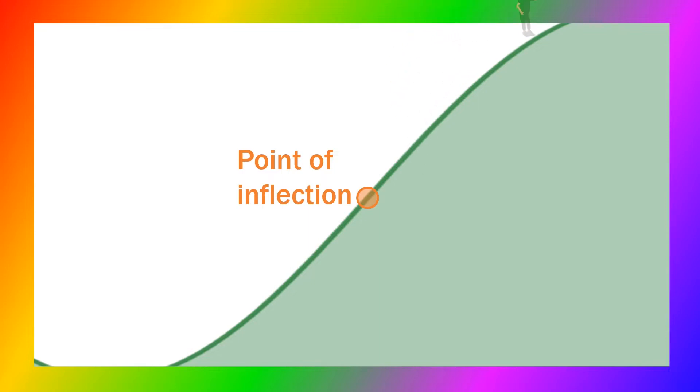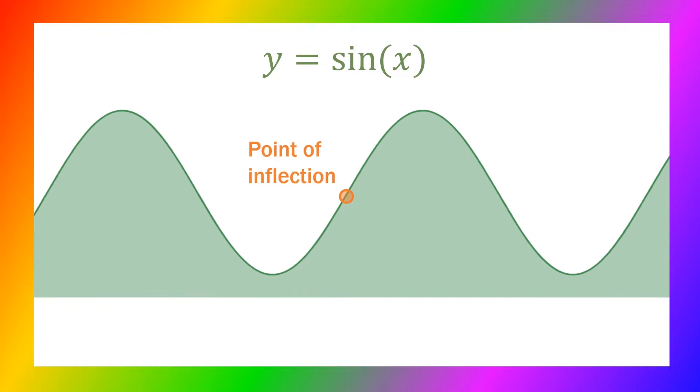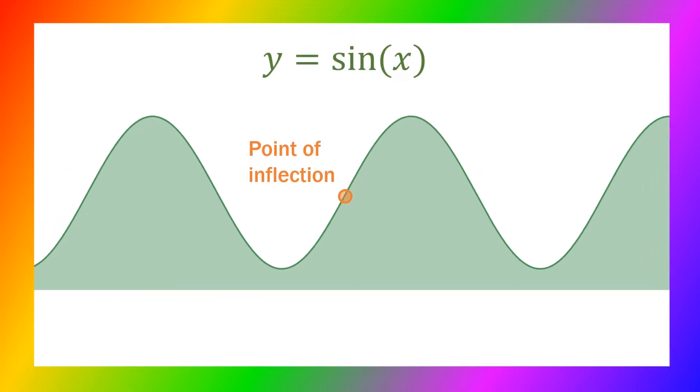In this case it's the point where the gradient stops increasing and starts decreasing. If you kept walking over the hill, there would be another point of inflection on the way down.